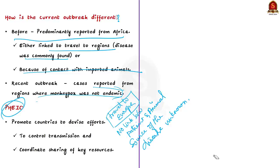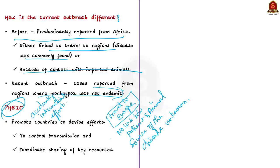This Public Health Emergency of International Concern designation entails accelerating international efforts to contain the spread of the disease before it becomes a pandemic. This would mean prompting countries to devise efforts to control transmission and coordinate sharing of key resources such as vaccines and therapeutics, apart from heightened contact tracing, diagnosis, and vaccination.